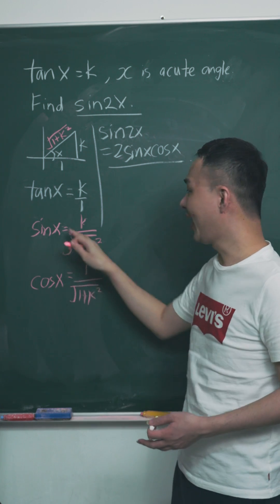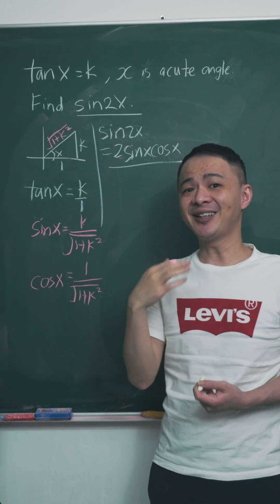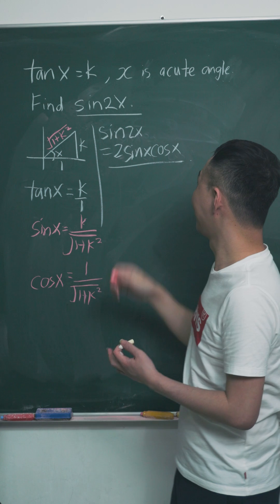Right now I have the sine and cos ready. I just need to substitute this one into the sine 2x formula. Then I can easily find the answer I want.